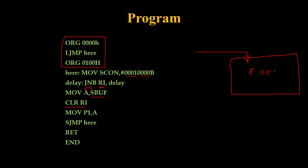After clearing the RI register, we move the accumulator value to Port 1 — that is the requirement. Whatever alphabet I type should appear on Port 1 of the 8051. Then we jump back so the process repeats in a loop. The SBUF register gets information from the keyboard; if nothing else is configured, the 8051 is directly connected to the keyboard via serial communication, taking characters one by one from the keyboard into the SBUF register. From SBUF we move to the accumulator, and from the accumulator to any port.